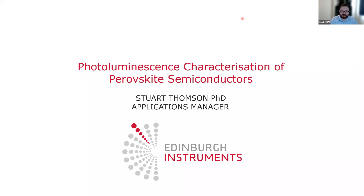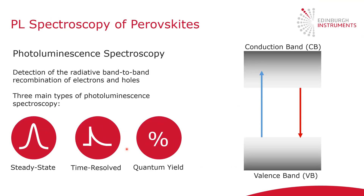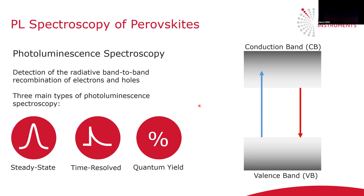Welcome to this Edinburgh Instruments presentation on the photoluminescence characterisation of perovskite semiconductors. Perovskites refer to any compound that obeys the ABX3 crystal structure. Semiconductors of these materials exhibit excellent optoelectronic properties, and they're being investigated for a wide range of optoelectronic devices, ranging from solar cells, light emitting diodes, laser gain materials, and photosensors. In this presentation, I'm going to show how photoluminescence spectroscopy is an excellent technique for the characterisation of these fascinating materials.